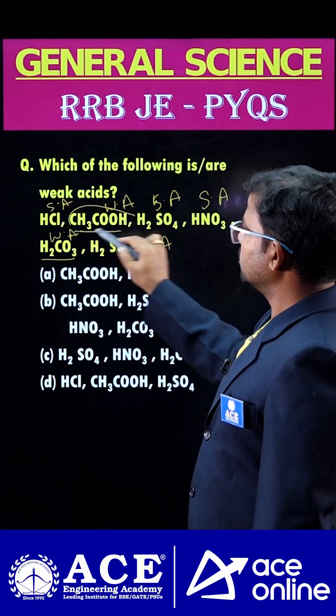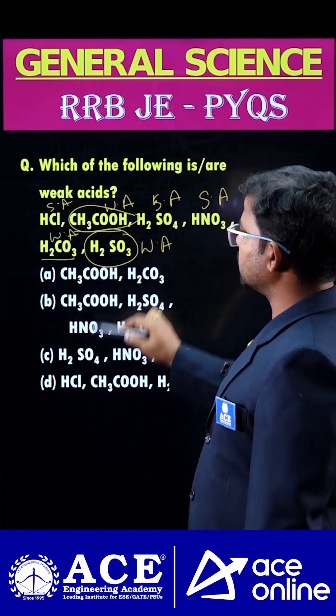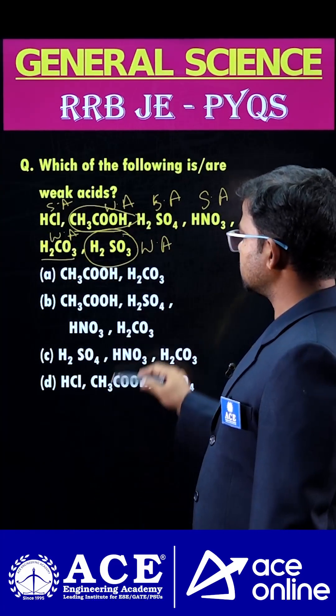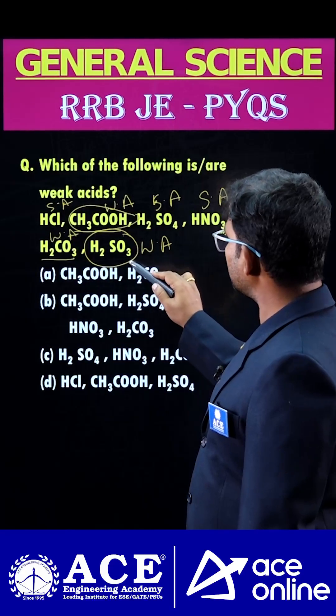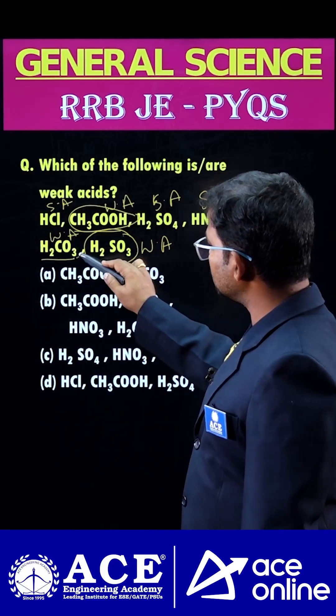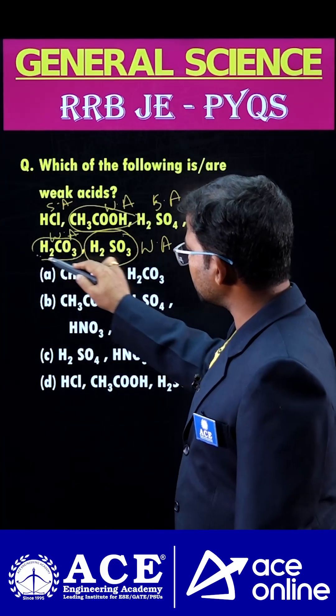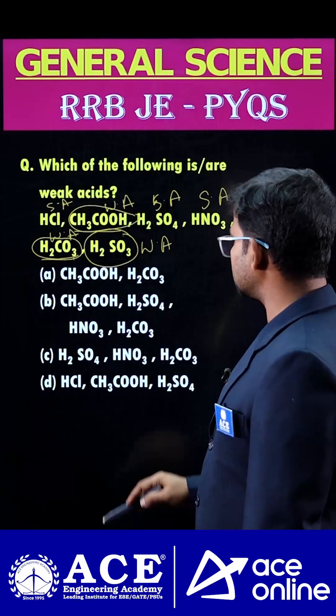So finally, H2SO3 and acetic acid are treated as weak acids. Carbonic acid is also a weak acid.